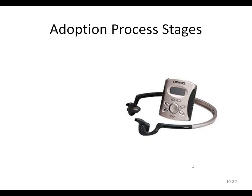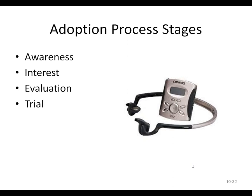Still thinking about innovation and creating new products — we have what are called adoption process stages. First we need to be aware of a product before we can purchase it. Awareness is created through advertising. Once aware, maybe we'll spur some interest. That mild interest can escalate to evaluation — let's go check it out. That may lead to a trial — let's try the product, see if we like it. And then adoption is where you actually physically purchase or use the product.